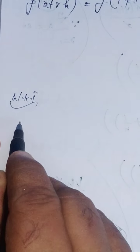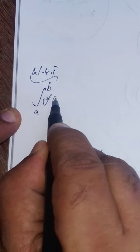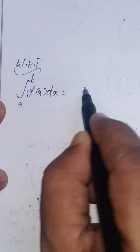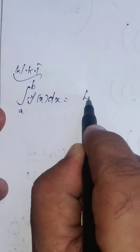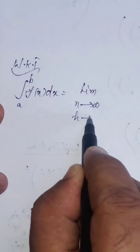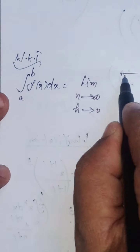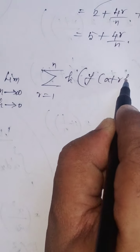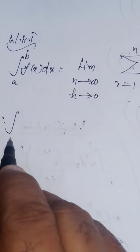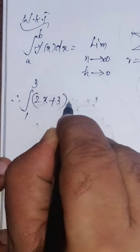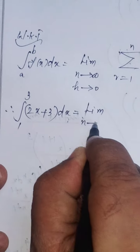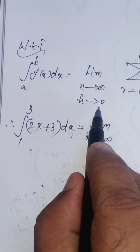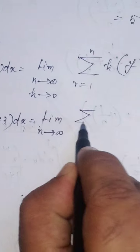Now, write the formula: integral a to b of f(x) dx equals limit as n tends to infinity and h tends to 0, of sigma r equals 1 to n, of h into f(a + rh). Therefore, integral 1 to 3 of (2x + 3) dx equals limit n tends to infinity — note we omit h tends to 0 — sigma r equals 1 to n.